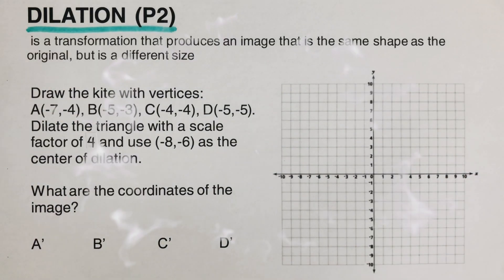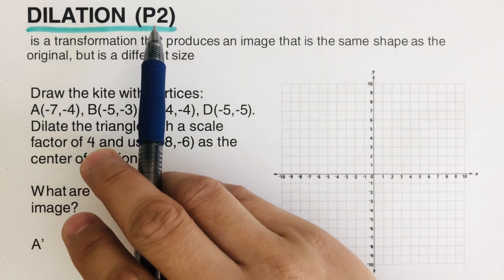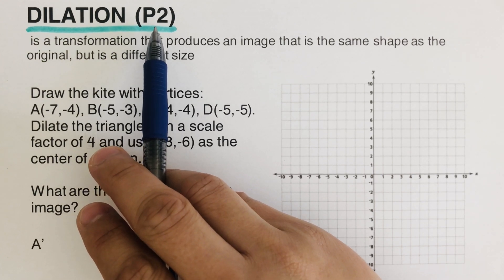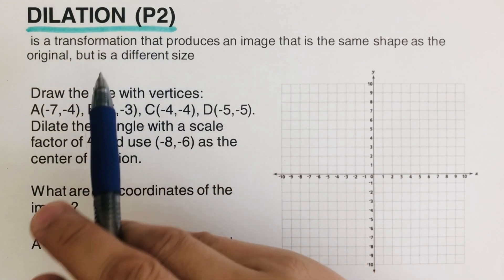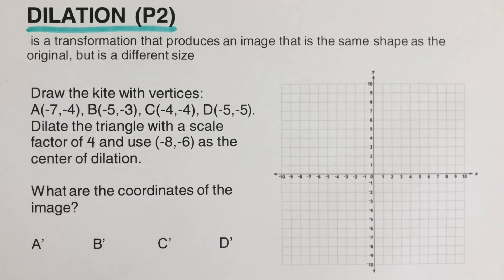Hello everyone, today we're going to cover dilation — it's the second part. I will put the link of the first part in the description box below. Dilation is a transformation that produces an image that is the same shape as the original, which we call the pre-image, but it's of a different size. These two figures are similar.